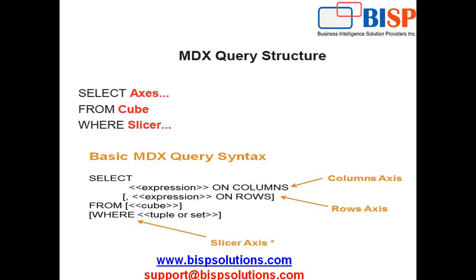MDX queries and SQL queries have a similar structure. In MDX you specify SELECT with axes, compared to column names in SQL. Instead of a table name you specify a cube name in the FROM clause. The WHERE clause in MDX is called a slicer. A typical MDX structure looks like: SELECT dimension member name ON COLUMNS, dimension member name ON ROWS, FROM cube name, WHERE you specify a tuple and set.